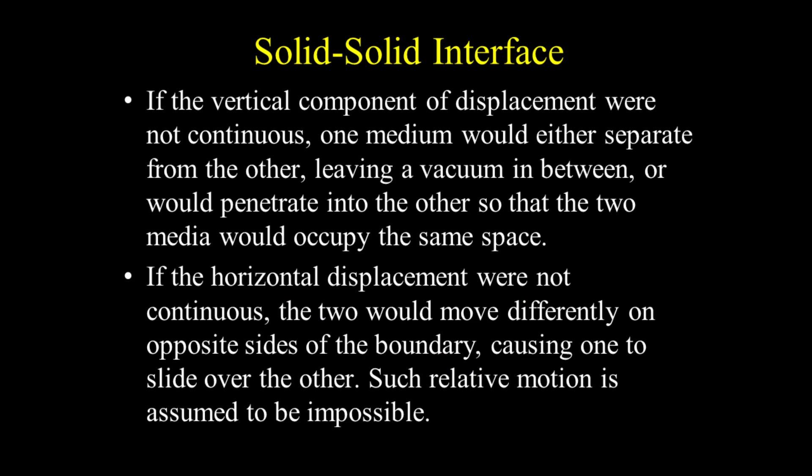If the vertical component of displacement were not continuous, one medium would either separate from the other, leaving a vacuum in between, or would penetrate into the other so that the two media would occupy the same space. If the horizontal displacement were not continuous, the two would move differently on opposite sides of the boundary, causing one to slide over the other. Such relative motion is assumed to be impossible.